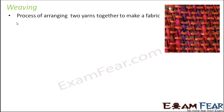Now comes the third step, that is weaving. In weaving, what we do is we arrange two yarns together to make a fabric. You can see one red yarn — this is one type of thread and the vertical ones are the other type of threads. They are crossed over one another, and that's how you make a fabric.